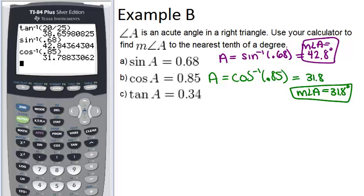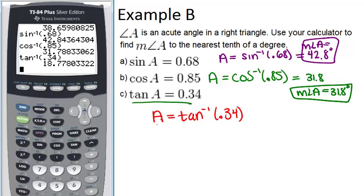For the last example, we're given the tangent of A is 0.34. So if the tangent of A is 0.34, that means A itself equals tangent inverse of 0.34. Again, relying on that calculator, it's pretty hard to do trigonometry without a calculator. And we do tangent inverse of 0.34. And we get our answer that the measure of angle A equals 18.8 degrees.